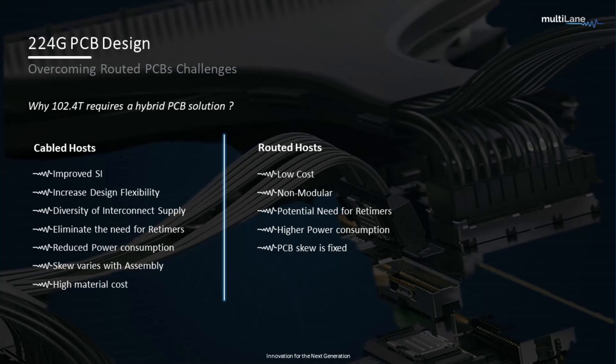These 4 dB insertion loss improvements are actually very important because they give a ton of design flexibility to system designers who need to ensure that all 64 ports fall into a fixed design budget. Ensuring better insertion loss and signal integrity performance means better overall system performance. It also means that we no longer need to use CDRs and retimers on a PCB, which implies less power consumption.